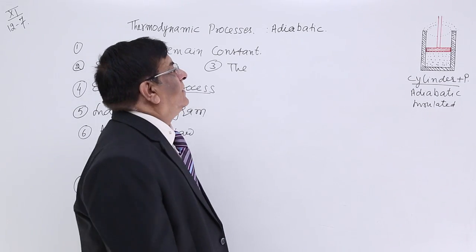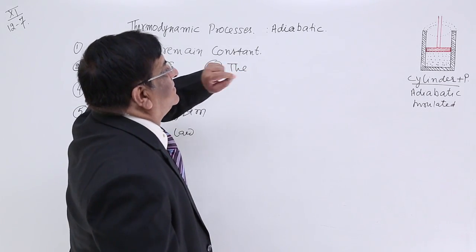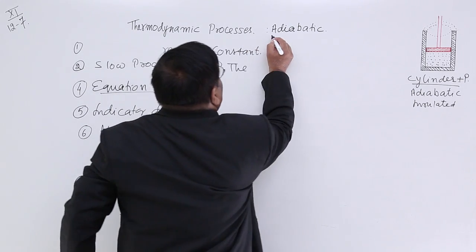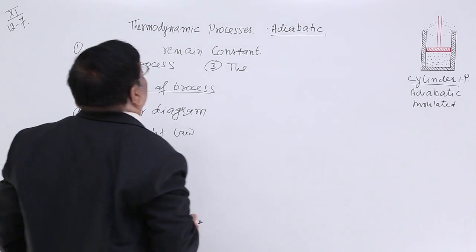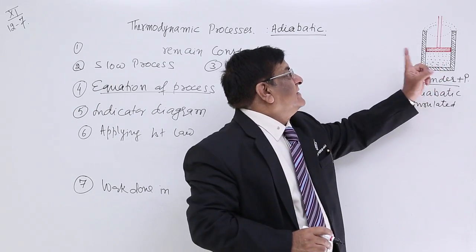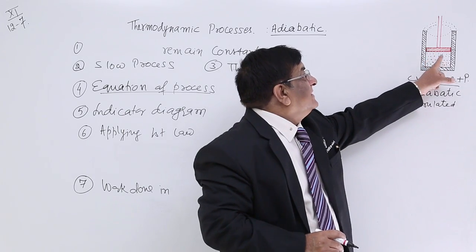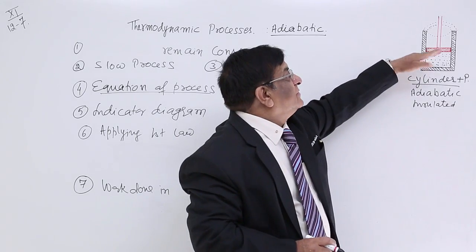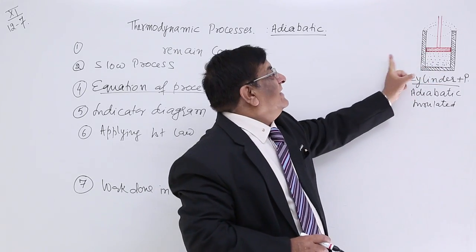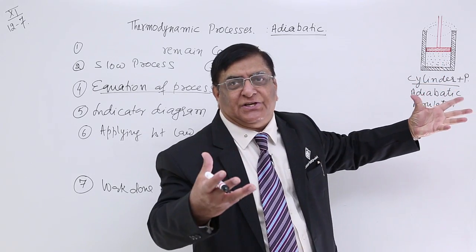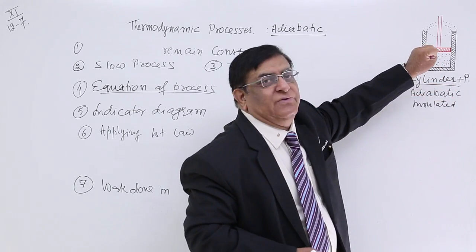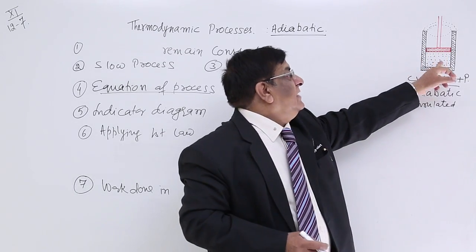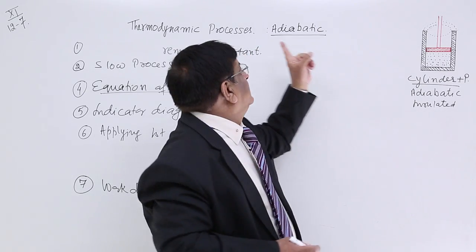Now we will study the second thermodynamic process and that thermodynamic process is adiabatic. In adiabatic process here we have a cylinder and a piston and this is our system on which the process will take place. So during this process when volume is increasing, decreasing, heat is entering, temperature is changing, during all this what type of material we have used here. So here what we want to keep constant so that it is known as adiabatic.